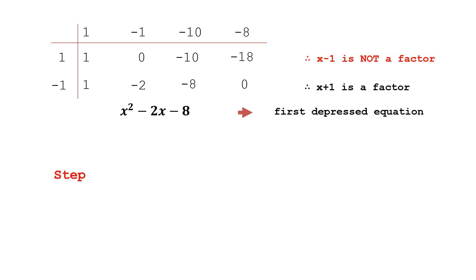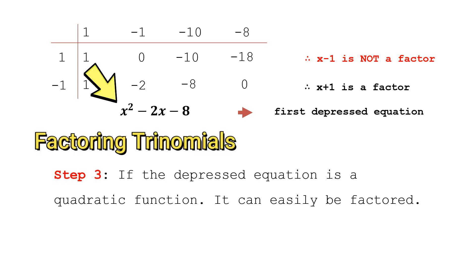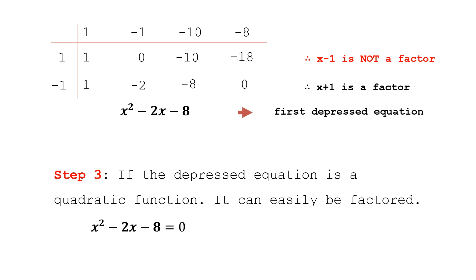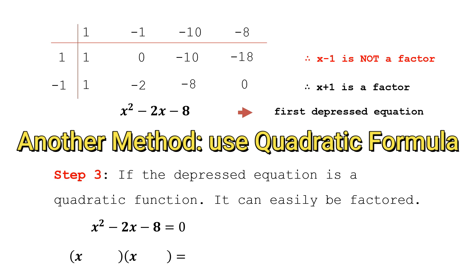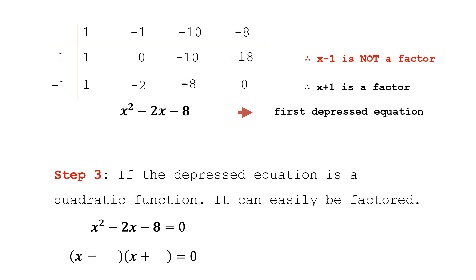Step three: if the depressed equation is a quadratic, it can easily be factored. We factor x² minus 2x minus 8 by looking for two numbers that multiply to give 8 and add to give negative 2. With the signs being minus and minus, we split the factors as positive 2 and negative 4.